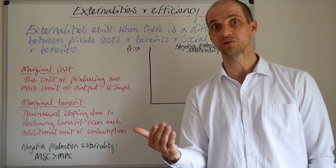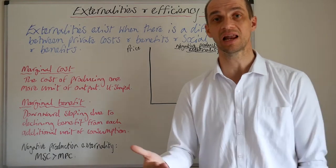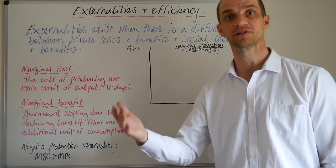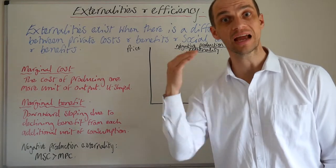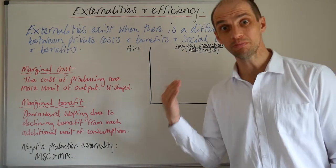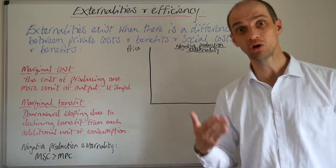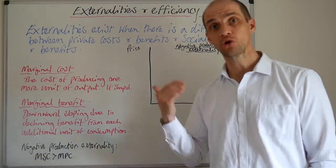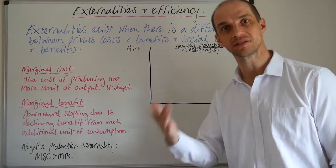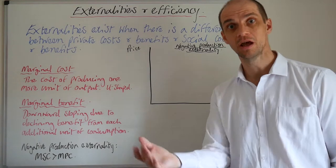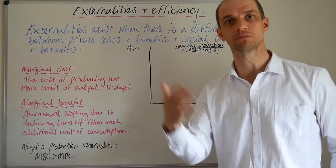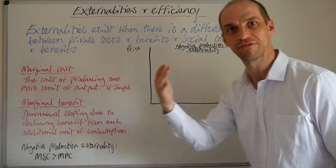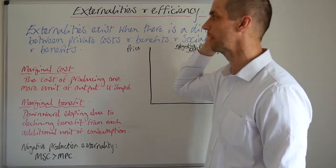In this lesson, we're going to focus on external production externalities. A great example is pollution. So that could be air pollution, noise pollution, light pollution, or blight. That is the eyesore that is created by a big factory spewing loads of smoke up into the environment and so on.